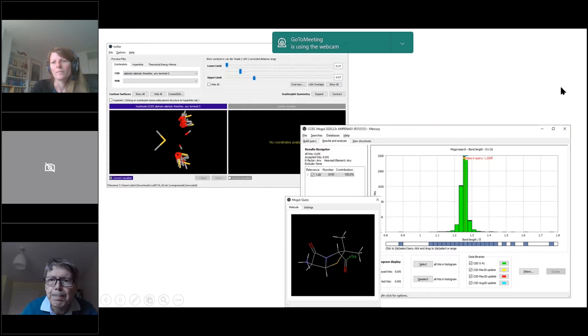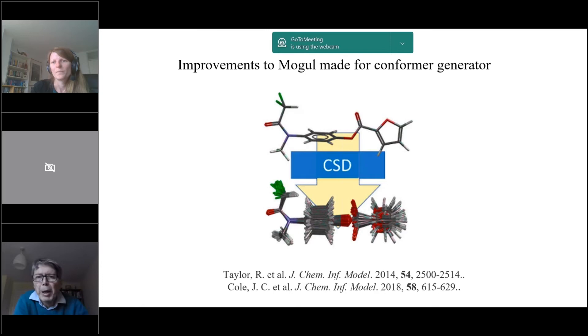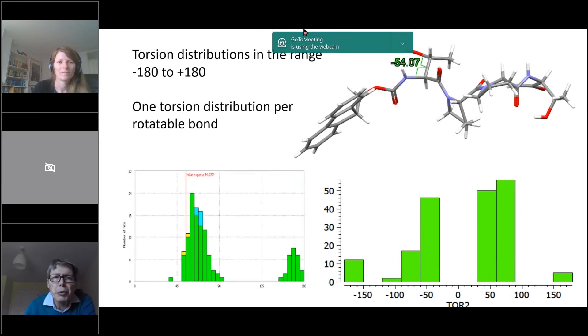Firstly, improvements to Mogul that I would like to see made. The first set of improvements have already been made specifically for a special version of Mogul that was developed to drive the CSD Conformer Generator. As far as I know, last time I looked, they haven't yet found their way into the standard Mogul, so I'll just run through a few of these.